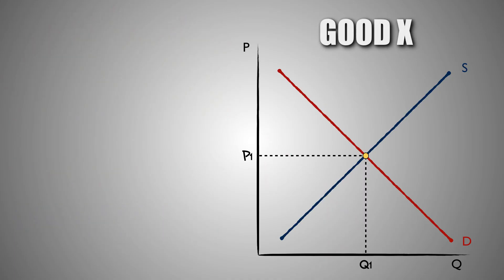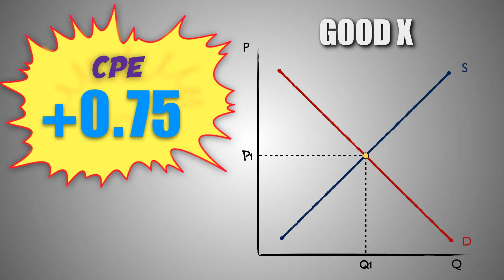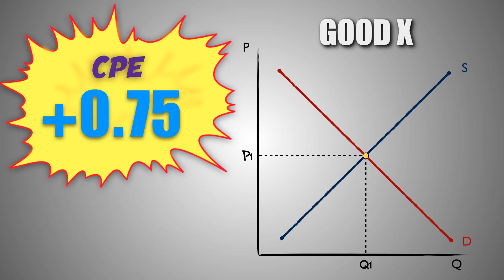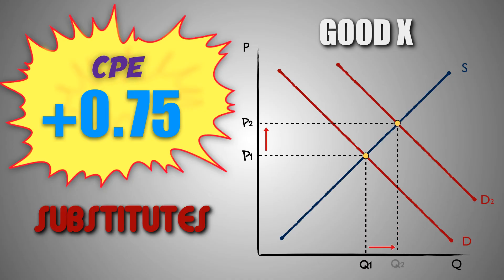Now assume that this is the market for good X. Good X and good Y have a cross-price elasticity coefficient of positive 0.75, and the price of good Y increases. Because the cross-price elasticity coefficient between these two goods is positive, we know that good X and good Y are substitute goods. As a result, if the price of good Y increases, the demand for good X, a substitute to good Y, will increase, as consumers will buy greater quantities of good X because good Y is now more expensive. This will cause the price of good X to increase, and boost the quantity of good X sold in the market.